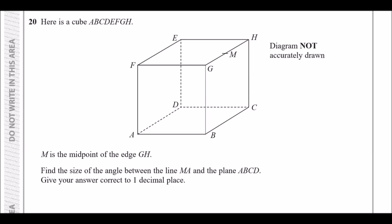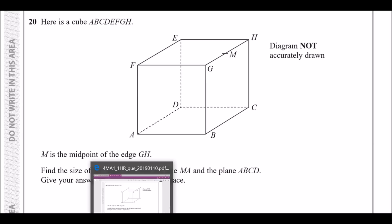Okay, number 20. Here is a cube ABCDEFGH, where M is the midpoint of the edge GH — so M is right in the middle. Find the size of the angle between the line MA and the plane ABCD, the ground. With these kinds of questions they're always the same.